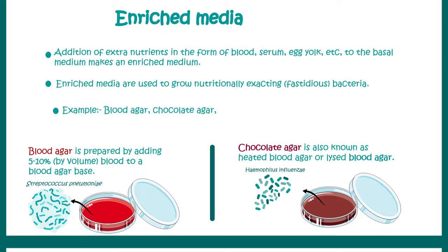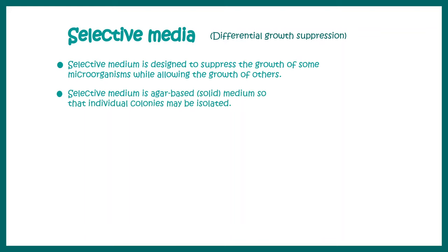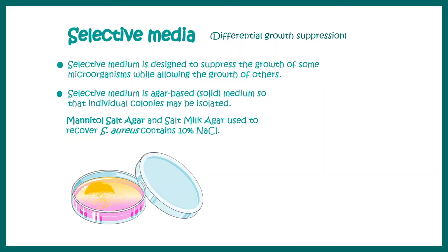Next, let's talk about selective media. Selective media is designed to suppress the growth of one category of microorganism while allowing the growth of other categories. It is agar-based media, and generally individual colonies can be isolated from it. Mannitol salt agar and salt milk agar are used for recovery of specific organisms such as Staphylococcus aureus. Staphylococcus aureus colonies can ferment mannitol, and thereby they display a characteristic yellow color.